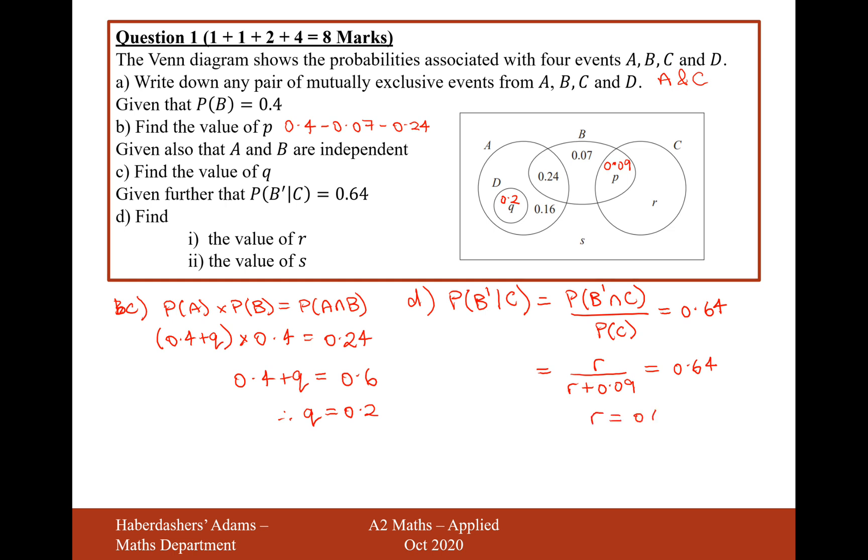R equals 0.64 R. And now we'll multiply 0.09 times 0.64 gives us 0.0576.